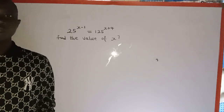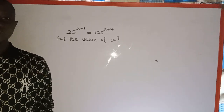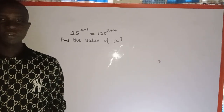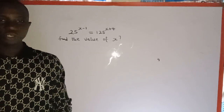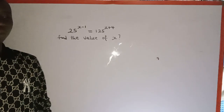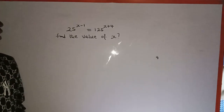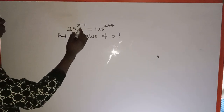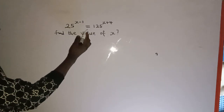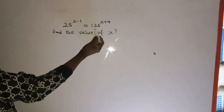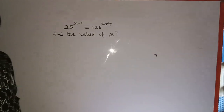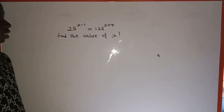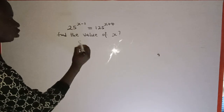Hello, good day viewers, you are welcome once again to my channel. In today's tutorial we are going to learn how to provide a solution to this exponential equation on the board. The equation says 25 to the power of s minus one is equal to 125 to the power of s plus four, and we are asked to find the value of s.